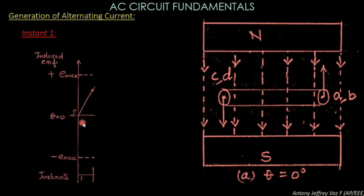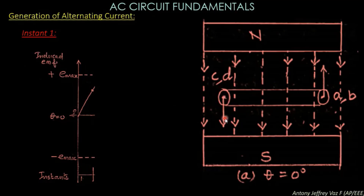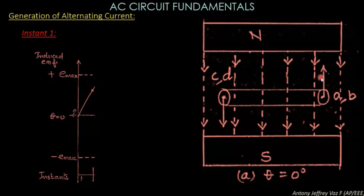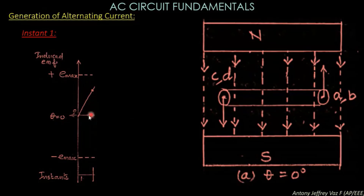If you see the graph, at theta equal to zero, the voltage produced by conductors CD and AB is zero. As per Faraday's law, the magnetic flux lines are parallel to the conductor — the flux goes from north pole to south pole, and the two conductor lines are also parallel, not perpendicular, to the magnetic flux. So in this condition, the induced voltage produced by the coil will be zero.